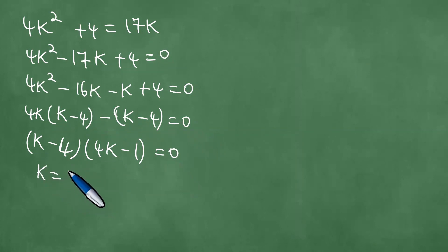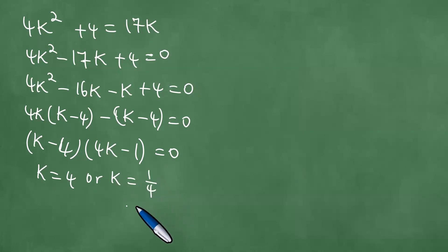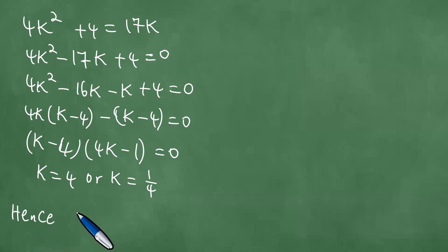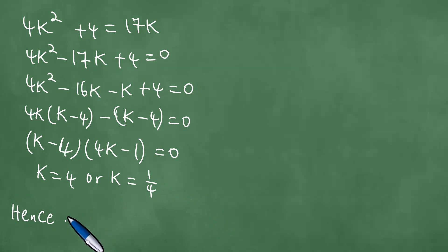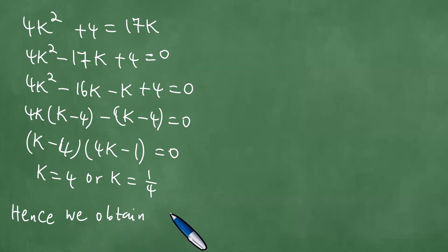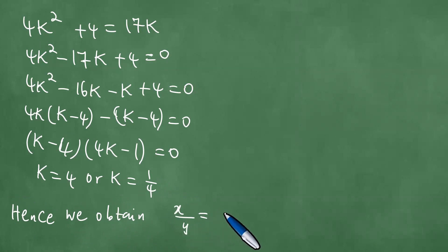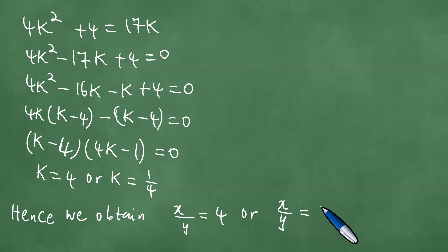The common factor (k minus 4)(4k minus 1) equals 0 gives us k equals 4 or 4k minus 1 equals 0, so k equals 1 quarter. Hence, we have that x over y equals 4, or x over y equals 1 quarter.